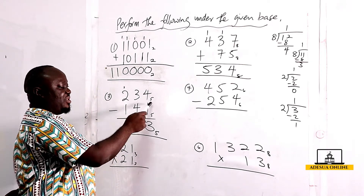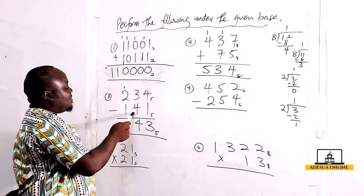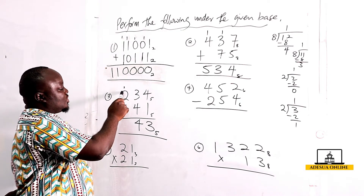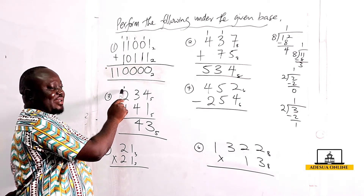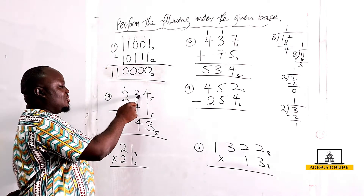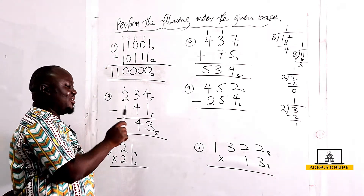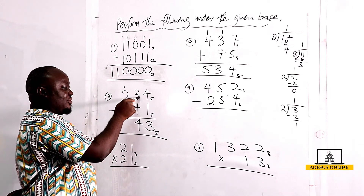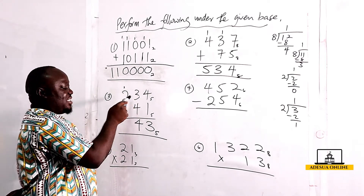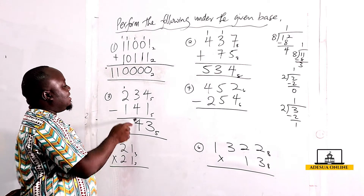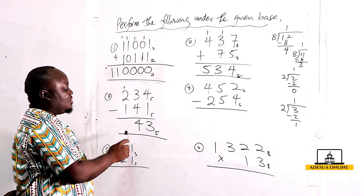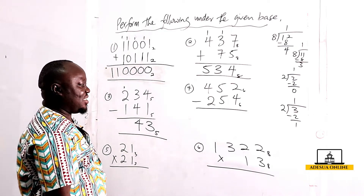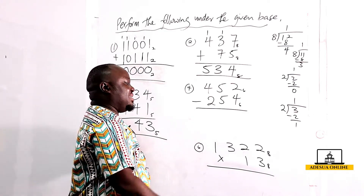Let me go over again: four minus one is three. Three minus four can't be done, so we borrow one from the next column — that column is now left with one. The borrowed one is worth five in base five, so five plus three is eight; eight minus four is four. Then one minus one is zero. So the answer is 043 to the base five.